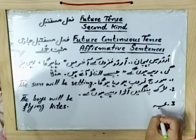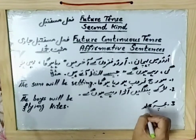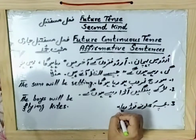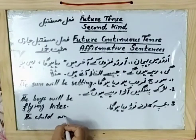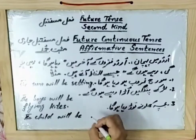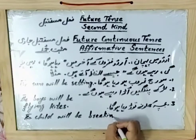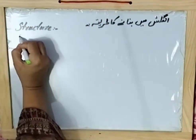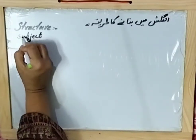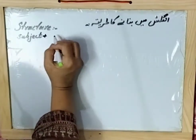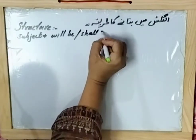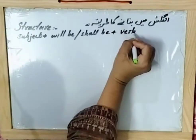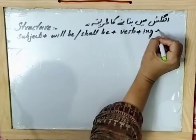'Baccha Kilone To Raha Hoga' — the child will be breaking toys. 'Will be breaking.' And then: 'Nish will be helping' or 'shall be.' These are the helping verbs used in Future Continuous Tense, along with the last object.